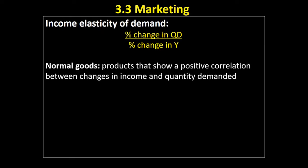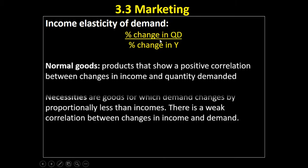The next sort of goods you need to know about are normal goods — products that show a positive correlation between changes in income and changes in quantity demanded. We would expect this relationship for most goods: as incomes go up, people tend to demand more things because they've got more disposable income. If we get a positive figure at the bottom — incomes go up — and a positive figure on the top — quantity demanded goes up — we've got a positive relationship. There are two types of normal goods.